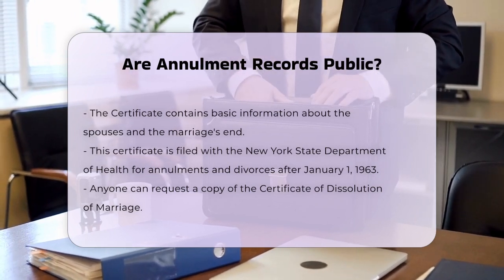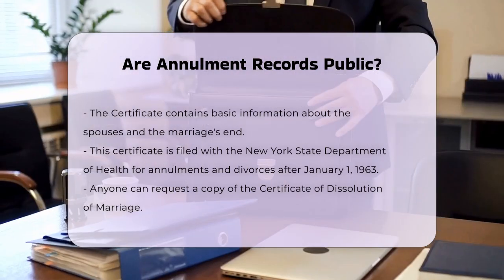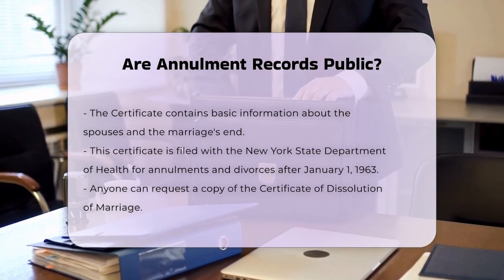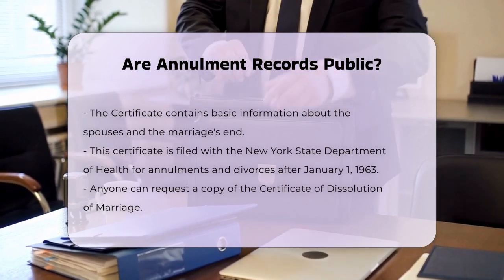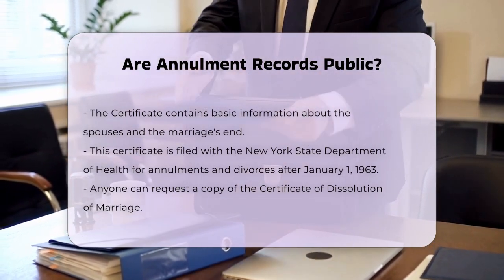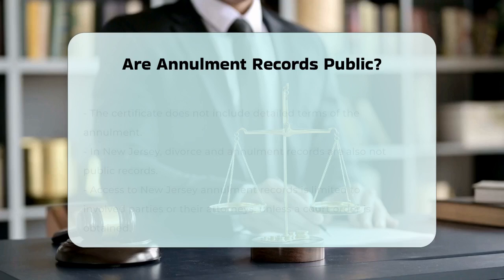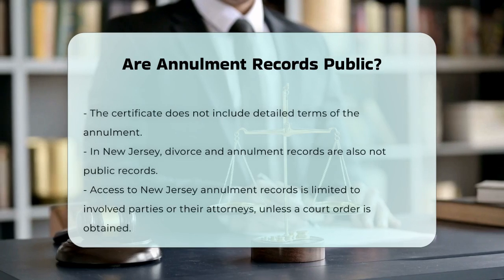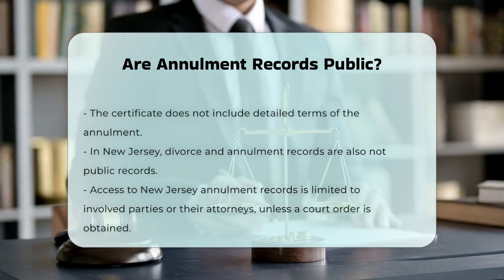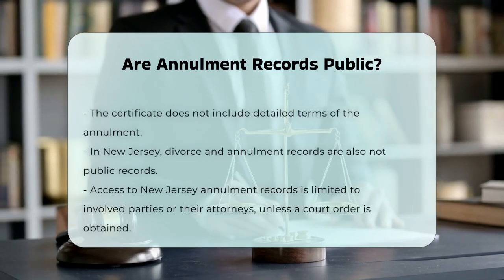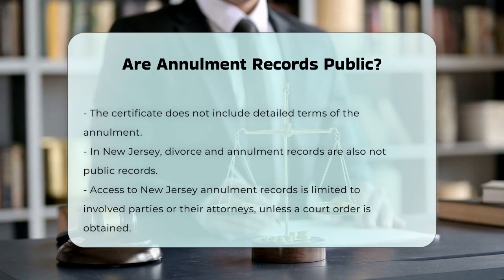In New Jersey, the rules are similar. Divorce and annulment records are not public records and can only be released to parties involved in the case or their attorneys, unless there is a court order directing the clerk to release the documents.